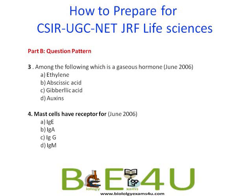At times you may get some very easy questions, like: among the following, which is a gaseous hormone? Most probably you may know the answer — ethylene. But most often the questions are from very deep topics and you should have in-depth knowledge to answer them. For example, mast cells have a receptor for which immunoglobulin? You know that mast cells are related to hypersensitivity reactions, and the immunoglobulin involved in hypersensitivity reactions is IgE. Therefore mast cells have IgE receptors on their surface. So you have to link many things in order to answer a question.